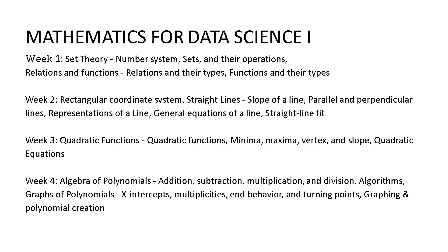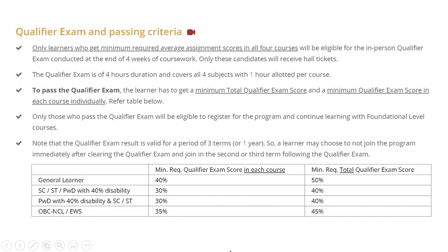Now let's understand the minimum criteria for passing the exam. If you are in the General category, you have to get 40% in each course and 50% total in the qualifier exam. If you are FD or SEs, then only 30% in each course and 40% in total. PWDs with 40% disability need 30% in each course and 40% in total. And OBCs need 35% in each course and 45% overall.